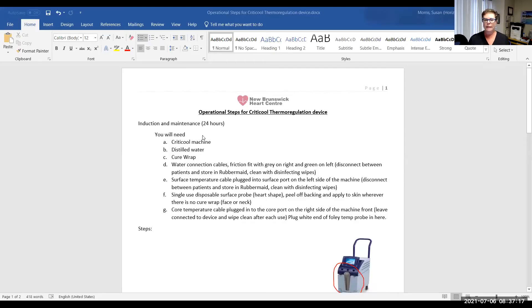So what you will need is a CritiCool machine, some distilled water, the cure wrap, which is in the blue bag, the water connection cable. So those are the blue connection cables. You will need a surface temperature probe. That is this one here that looks like a heart that will connect into the cable that has a green end on it. And you will need your Foley catheter to connect to the core temperature probe, which is gray.